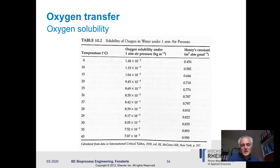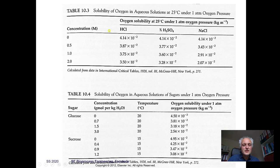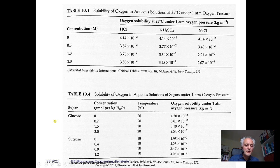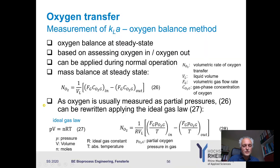Oxygen solubility values are tabulated for various solutes. For example, increasing NaCl from 0 to 2 molar reduces oxygen solubility by half. Sugars also substantially reduce solubility. In a complex fermentation medium, this can be highly relevant for calculating the actual saturation concentration and hence the driving force delta C.